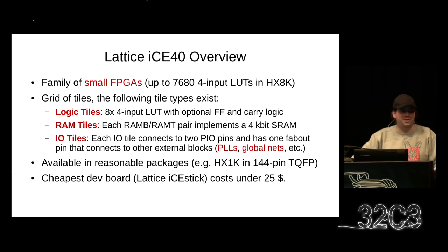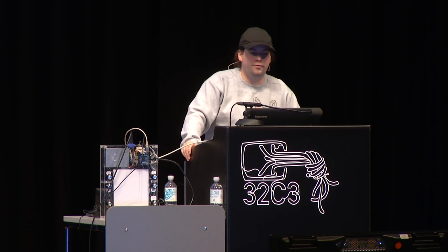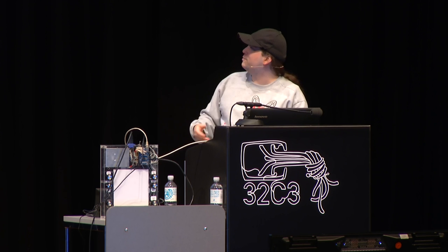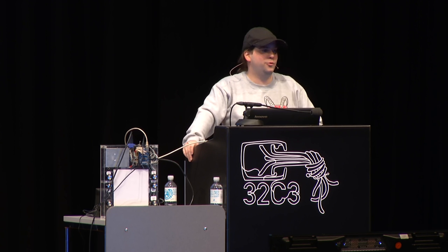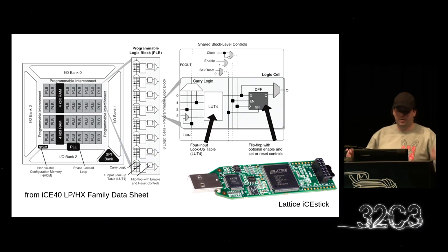A nice thing about ICE40 FPGAs is that they come in quite reasonable packages. When you'd like to make your own boards, it can be a hassle to work with ball grid arrays, but the ICE40 FPGAs come in packages like 144-pin QFP that you can even solder by hand. There are very cheap development boards available from Lattice directly — the Lattice IceStick costs less than $25, so it's really affordable for someone who just wants to experiment. If you're doing low-level stuff and worried about breaking your dev board by fiddling with configuration bits manually, it's nice to have a board in this price range that you can simply replace.